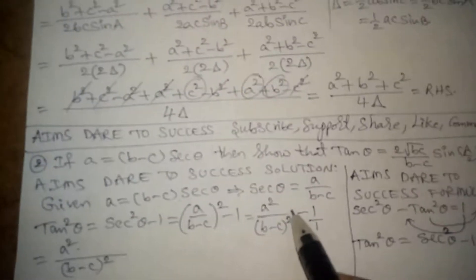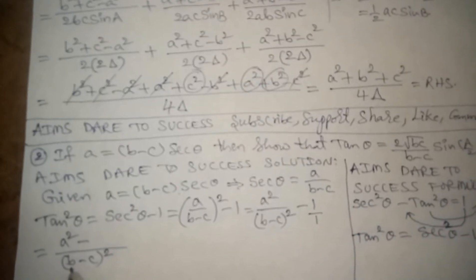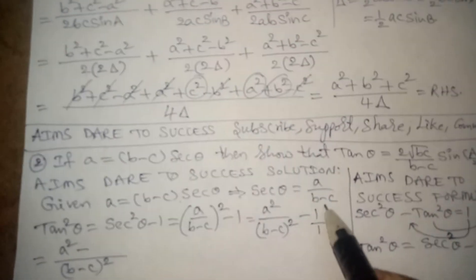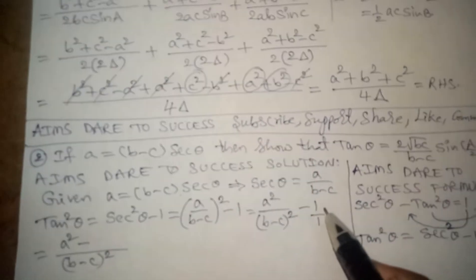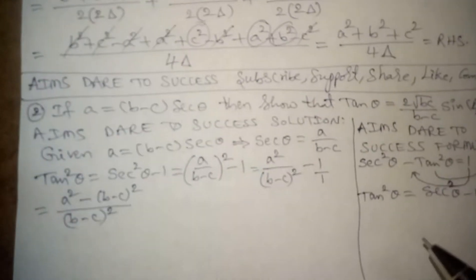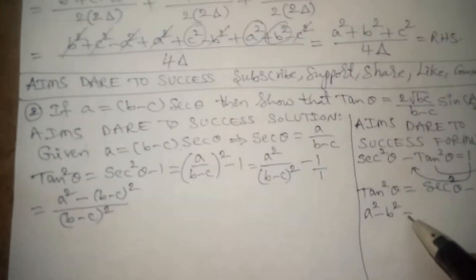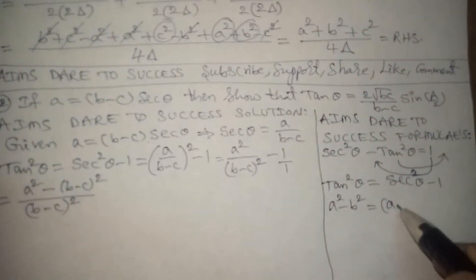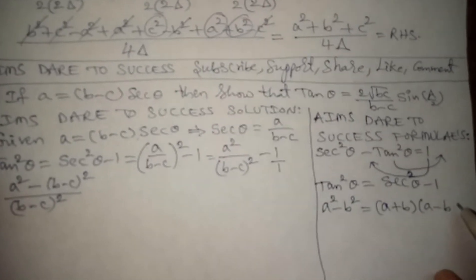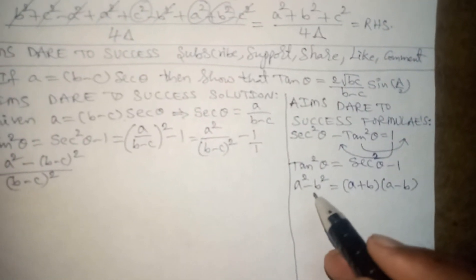After taking LCM as (b minus c) squared, we write a squared in the numerator, then subtract (b minus c) squared, since 1 multiplied by (b minus c) squared gives (b minus c) squared. This expression is in the form a squared minus b squared, which factors as (a plus b) times (a minus b).